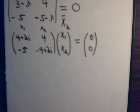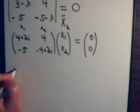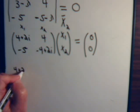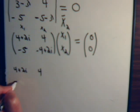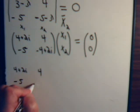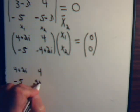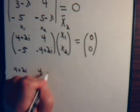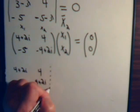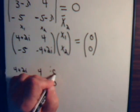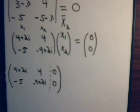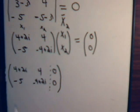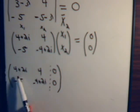Write this as an augmented matrix. It's 4 plus 2i, 4 minus 5, minus 4, plus 2i. Like this. We can divide the first row by 2 to give us 2 plus i and a 2 here.